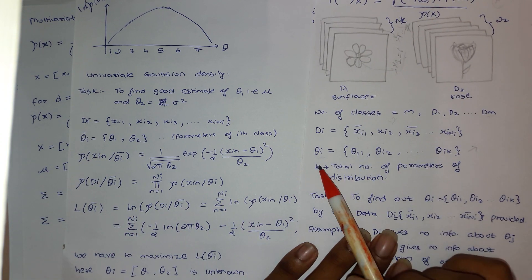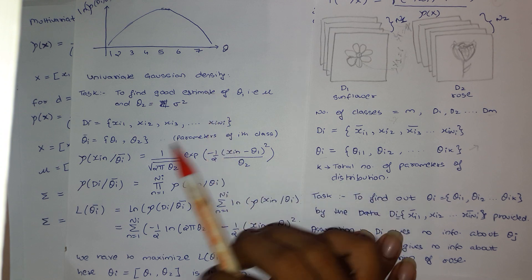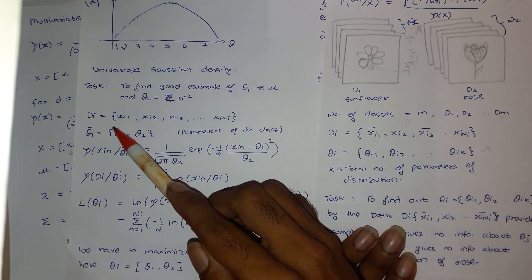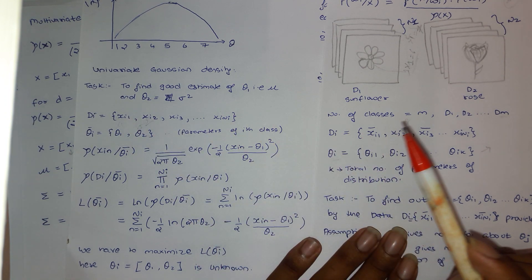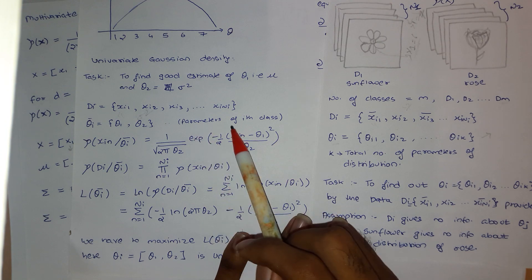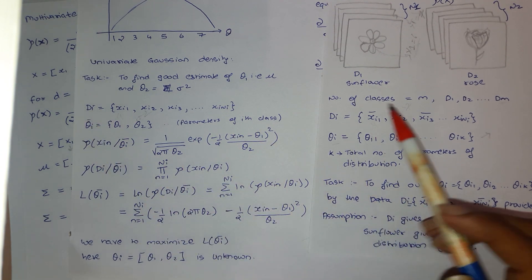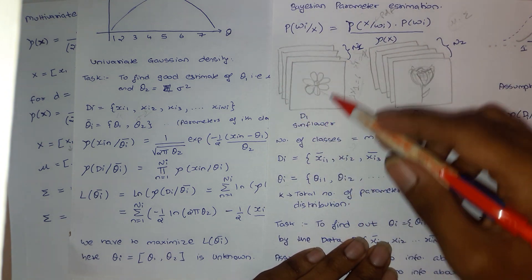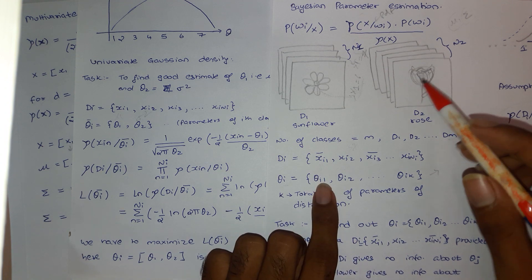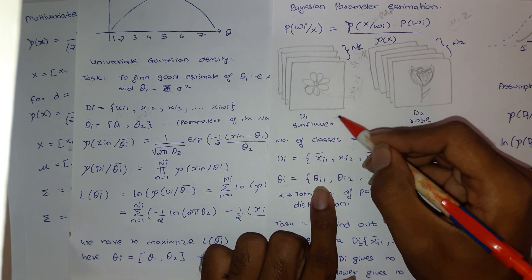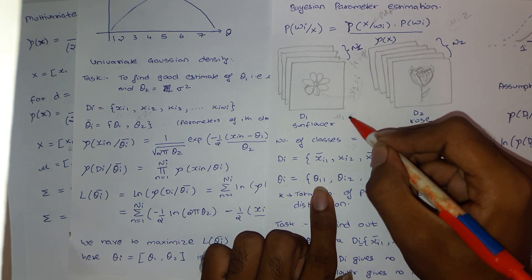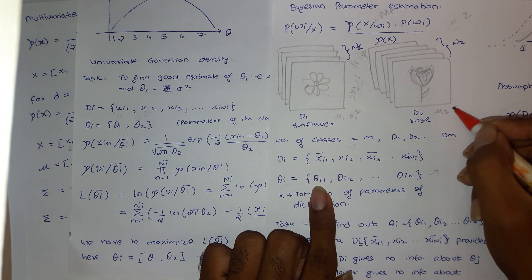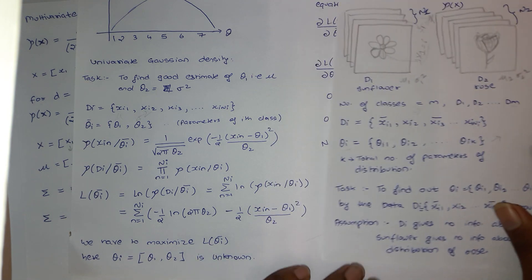In the general case there were theta_k parameters, but for a Gaussian density we just have two: theta_1 for the mean and theta_2 for the variance. These are the parameters of the i-th class. Since there are two classes, we have two Gaussians. For sunflower we have mu_1 and sigma_1 squared, and for rose we have mu_2 and sigma_2 squared.